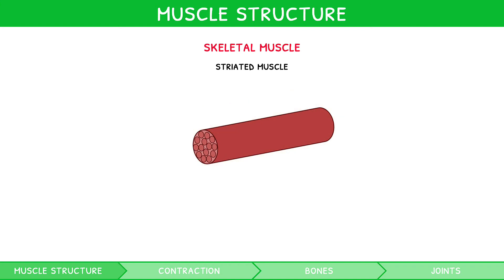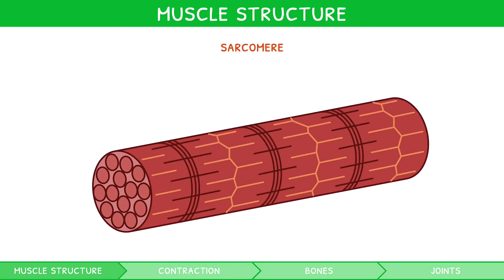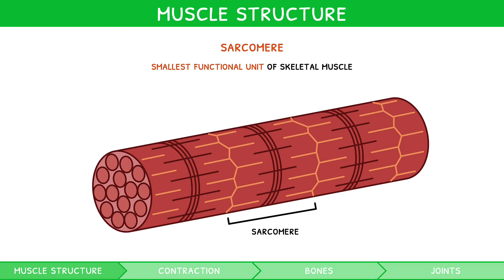Each myofibril is made up of many smaller units known as sarcomeres. These are defined as the smallest functional unit of skeletal muscle, and give myofibrils their characteristic banding pattern, alternating between light and dark bands. In the centre of each light band is a disc structure called the Z-line, and sarcomeres run from one Z-line to the adjacent Z-line, with the centre of each sarcomere being termed the M-line.